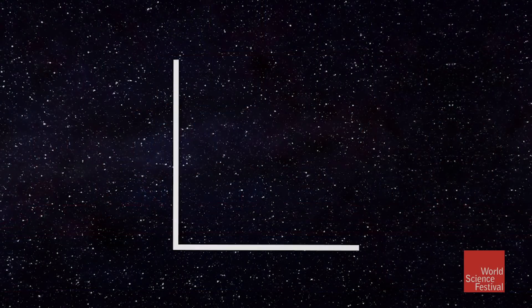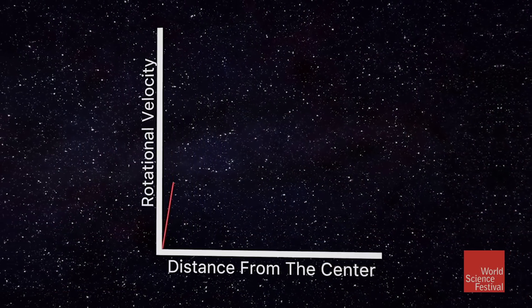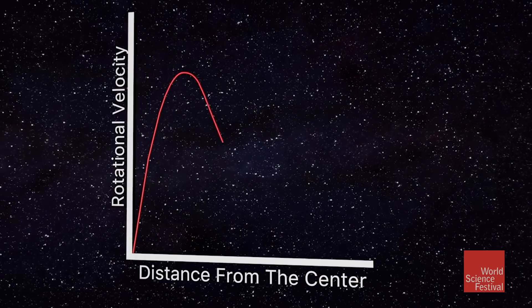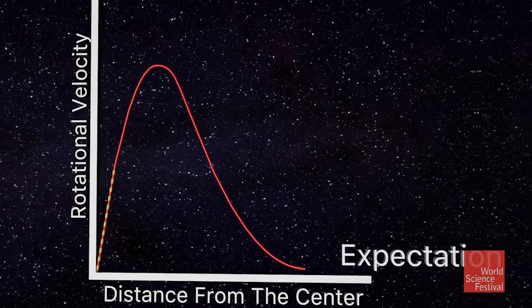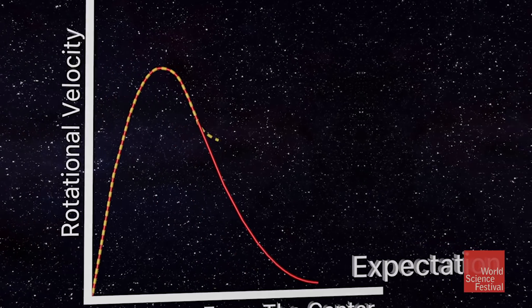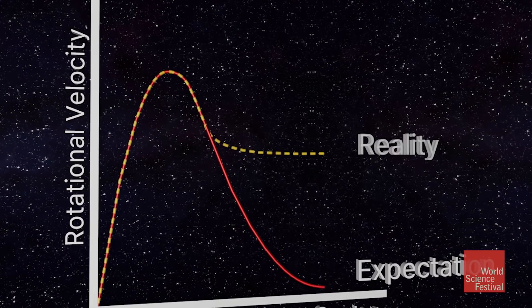And we can probably show this. This is what we talked about before, namely the expectation for these rotation curves where on the vertical axis we have the velocity and to the right we have the distance, and then you see the velocity going down. What's actually being observed is that it's indeed flattened.